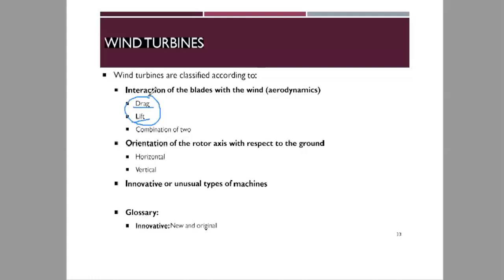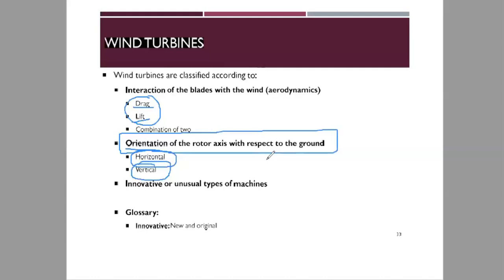The second classification has to do with the orientation of the rotor axis with respect to the ground. The rotor axis could be horizontal or vertical with respect to the ground. The third classification covers various innovative or unusual types of machines. Things are evolving, new technologies are coming up, and some of the latest classifications that exist in the real world will be mentioned under this category.